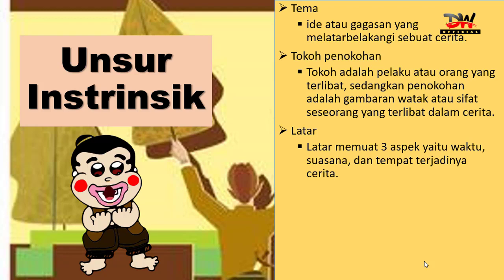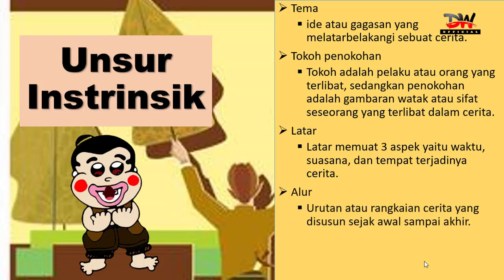Jadi unsur instrinsik ini ada lima. Sekarang yang keempat: alur. Alur adalah urutan atau rangkaian cerita yang disusun sejak awal sampai akhir, atau urutan jalan cerita dalam sebuah cerpen yang disusun secara kronologis. Ada dua jenis alur dalam cerpen. Tokoh penokohan ada empat, latar ada tiga, dan alur ada dua.